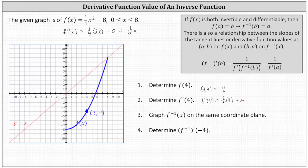So if we were to sketch the tangent line at this point, it would look something like this, and the slope is equal to positive 2.